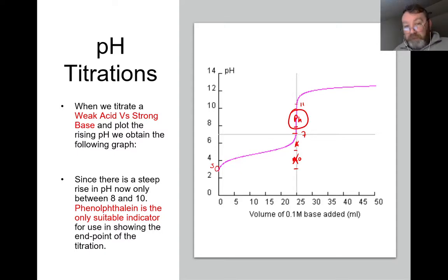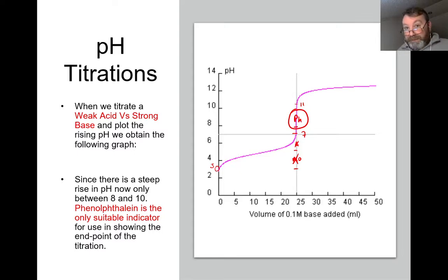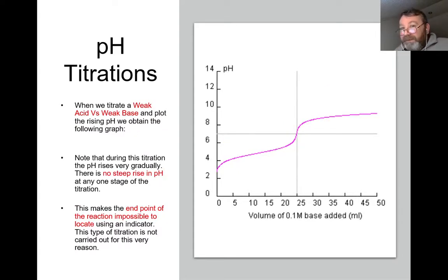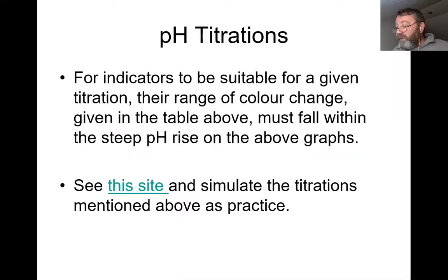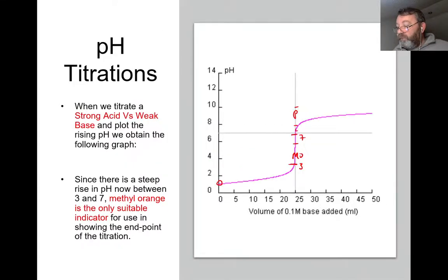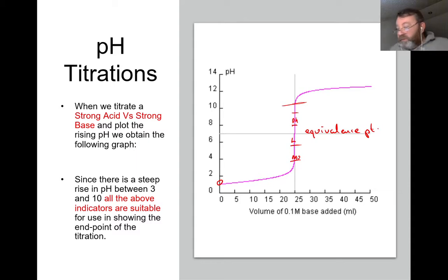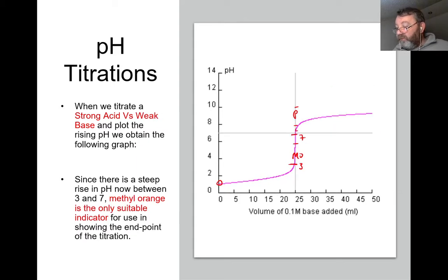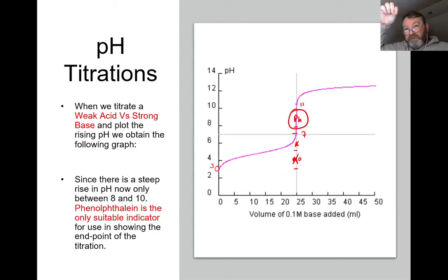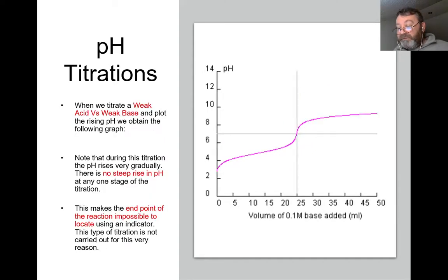Finally, look carefully at the weak acid/weak base titration. If you go back over the other three curves, they all have an almost vertical line in the middle — the equivalence point. But the weak acid/weak base titration has no real equivalence point. It's very very hard to find where that vertical line is, so this type of titration is actually never carried out, because there is no indicator that will allow us to see the point of neutralization.